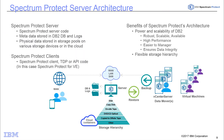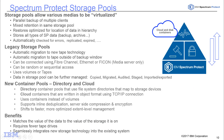The Spectrum Protect Server tracks Spectrum Protect Plus images in its databases and logs, and stores the data anywhere in its storage hierarchy — whether legacy storage pools or the new container pools. Legacy storage pools capitalize on tape technology and support migration between storage pools. Choosing the new container storage pools provides inline dedupe, server-side compression, and encryption.